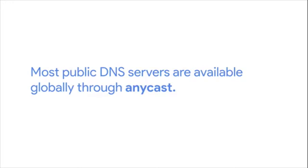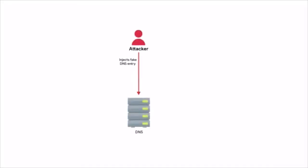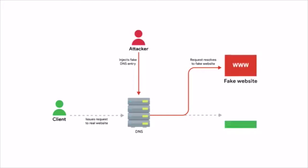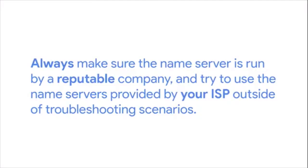Other easy-to-remember options are the IPs for Google's public DNS. Google operates public name servers on 8.8.8.8 and 8.8.4.4. Unlike the Level 3 IPs, these are officially acknowledged and documented by Google to be used for free by anyone. Most public DNS servers are available globally through Anycast. Always do your research before configuring devices to use a public name server — hijacking outbound DNS requests with faulty responses is an easy way to redirect users to malicious sites. Always make sure the name server is run by a reputable company, and try to use name servers provided by your ISP outside of troubleshooting scenarios.